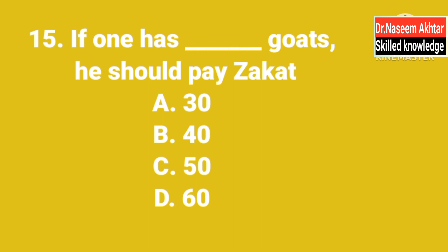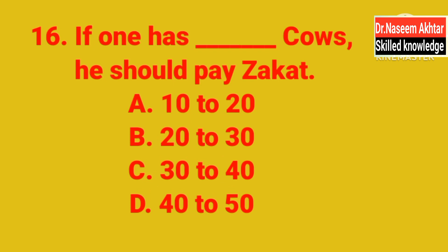MCQ 15: If one has dash goats, he should pay Zakat. کتنی بکریاں ہونی چاہیے جس پر Zakat فرض ہے؟ A. 30, B. 40, C. 50, D. 60. The correct answer is B — 40. 40 goats پر Zakat فرض ہے۔